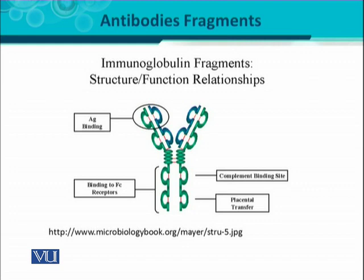The three effector functions of the FC fragment are: first, complement binding — the complement binds to this site; second, placental transfer — when the fetus is developing inside the mother, immunoglobulins from the mother are transferred to the fetus through the placenta to provide neonatal or fetal immunity, and this transfer occurs via the FC fragment; third, binding to FC receptors present on the surfaces of various immune cells like phagocytes.